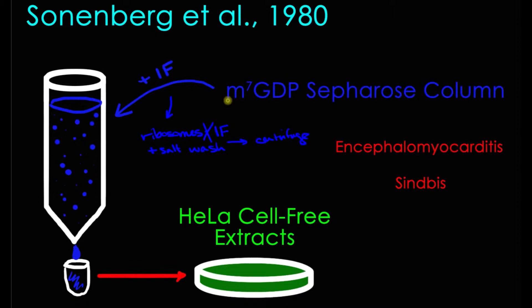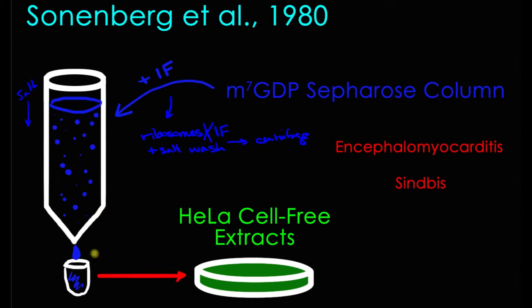But if you add a salt wash — washing the ribosome–initiation factor complex with a salty solution — it will end up dissociating the complex. You can then centrifuge the solution: the ribosomes are heavy so they'll end up at the bottom, and your initiation factors will float around in solution. The experimenters took those initiation factors and added them to the M7GDP Sepharose affinity column. They washed with higher and higher salt concentrations until, in the later fractions, they could wash EIF4E off the column, ending up with isolated EIF4E.